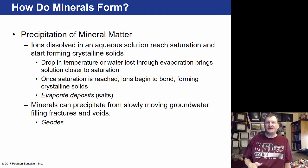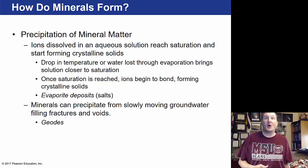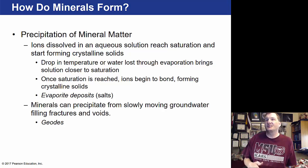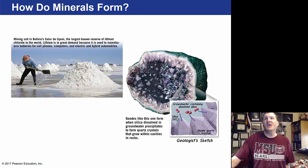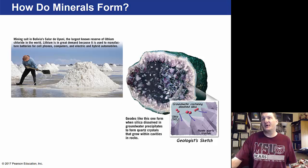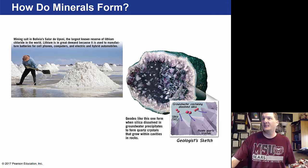Once saturation is reached, the ions begin to bond and we get evaporite deposits — the most common of which is salt. Minerals can also precipitate from slowly moving groundwater, filling in fractures and voids to form geodes. These are shown a lot in science museums and science stores — they're very beautiful but pretty expensive.